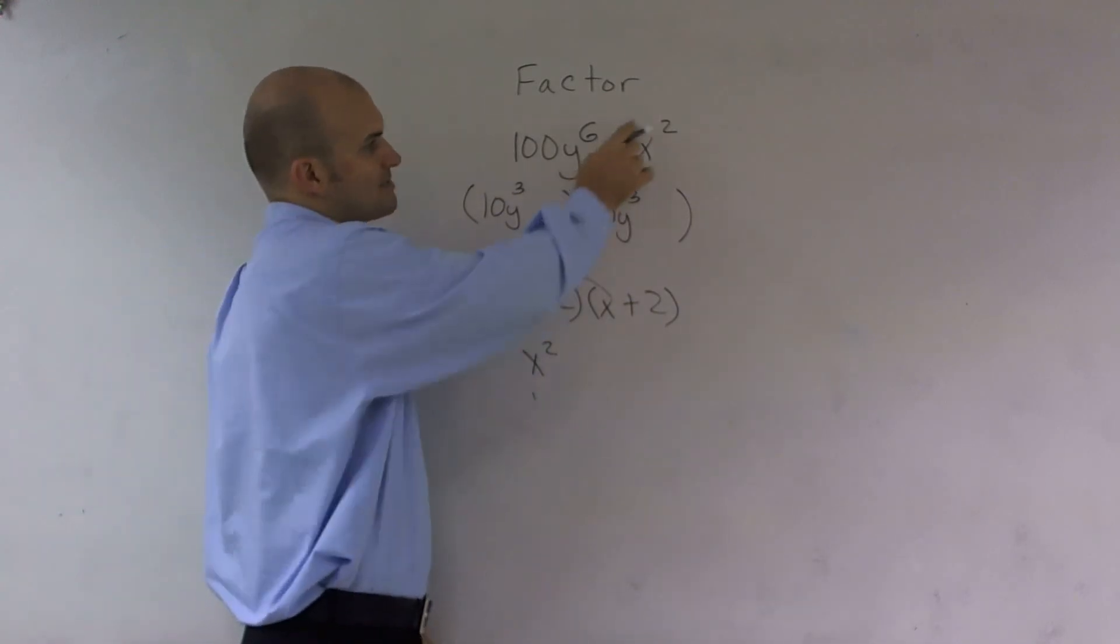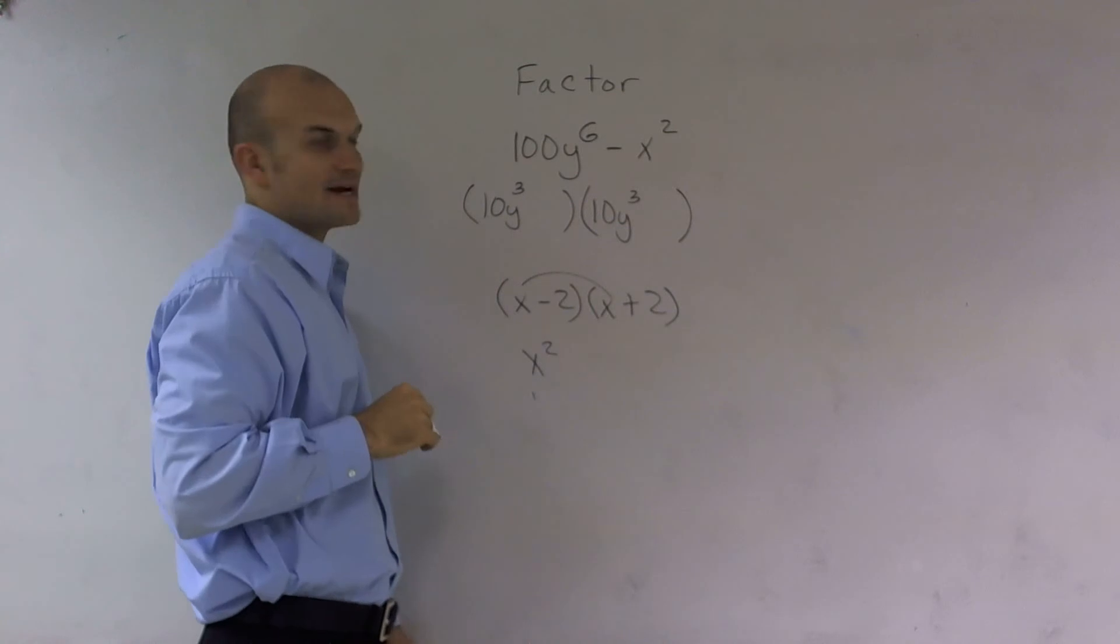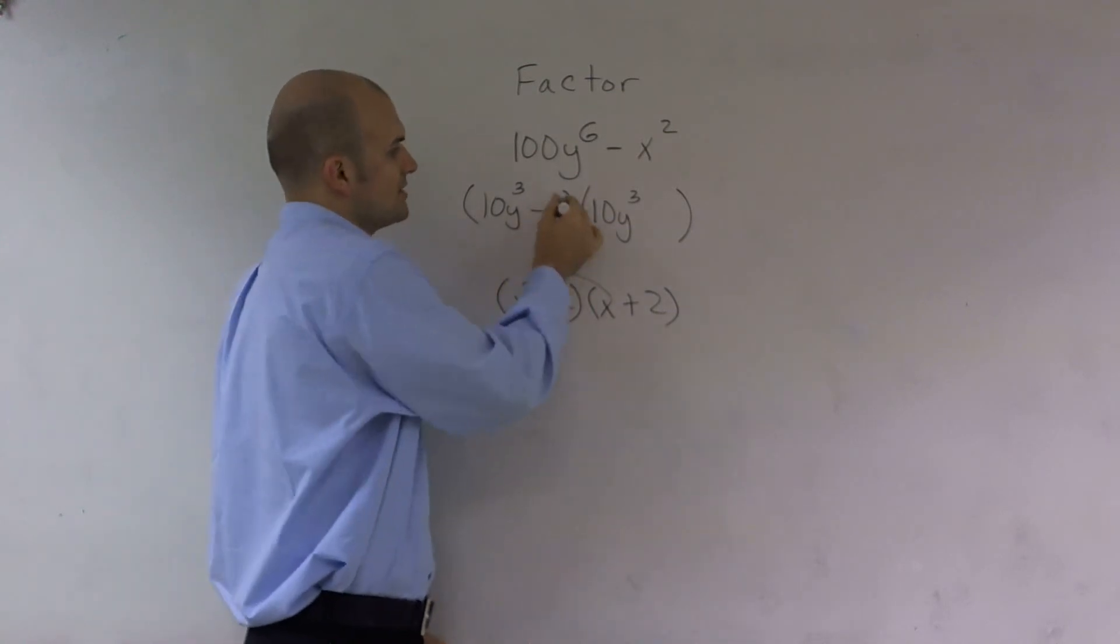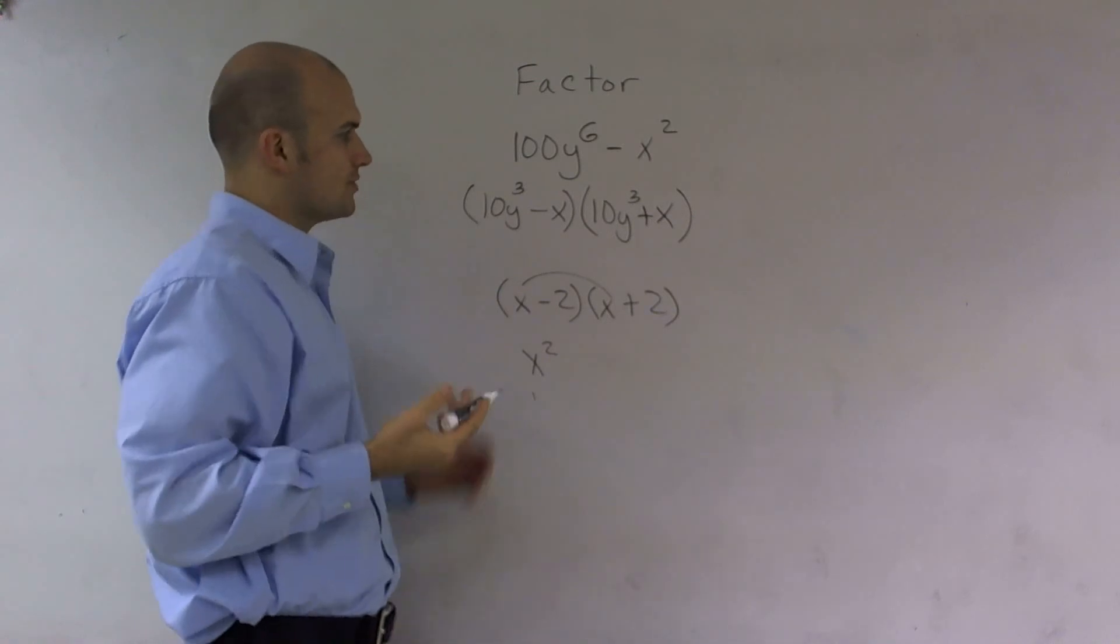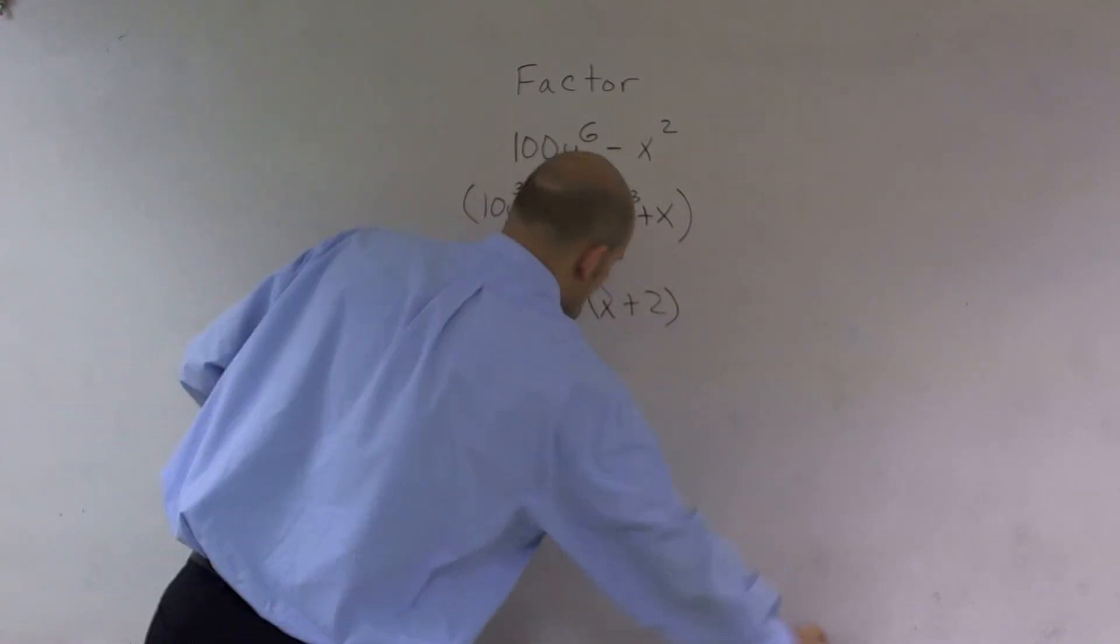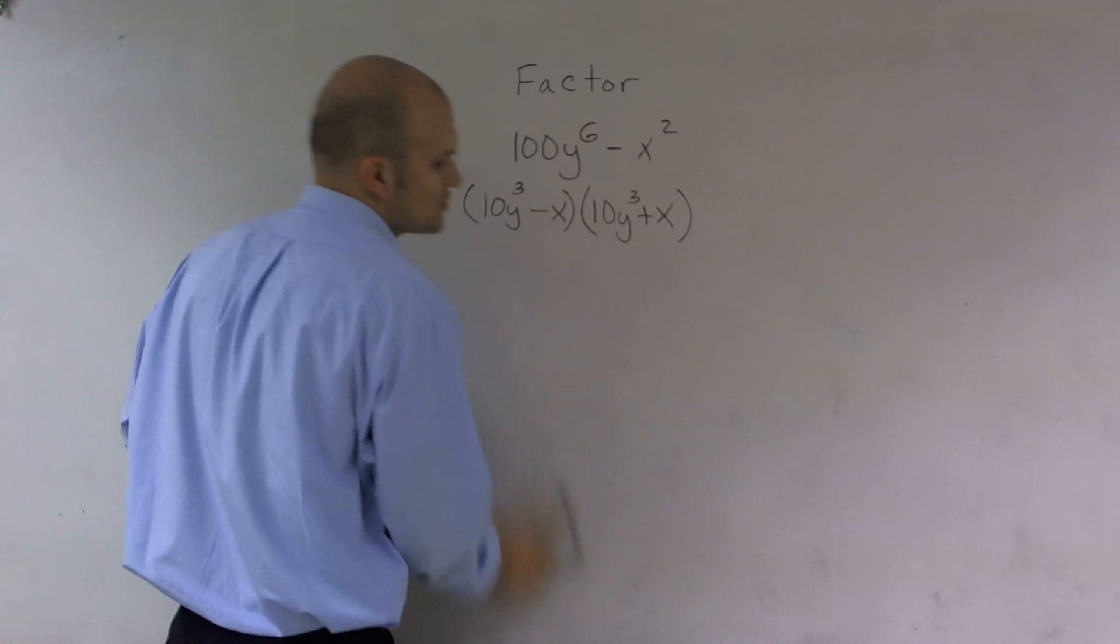Then I think about, is there two numbers I could pick that would give me a negative x²? Well, yes, you could pick a negative x and a positive x. So the reason why this works, ladies and gentlemen, is this is what we call a difference of two squares.